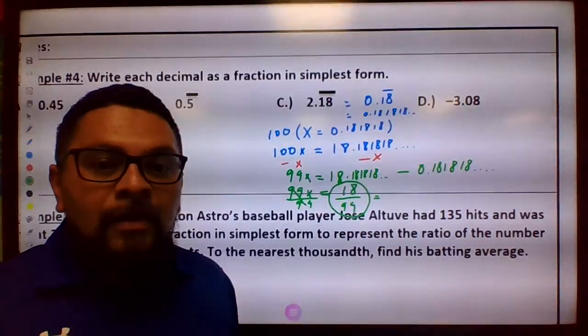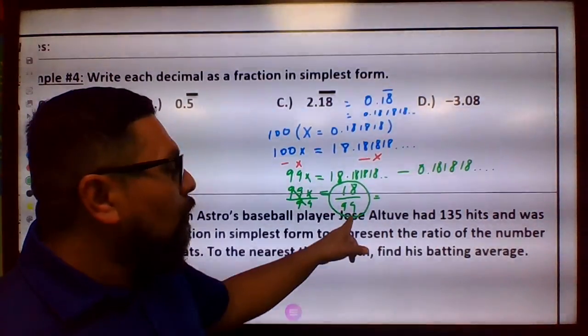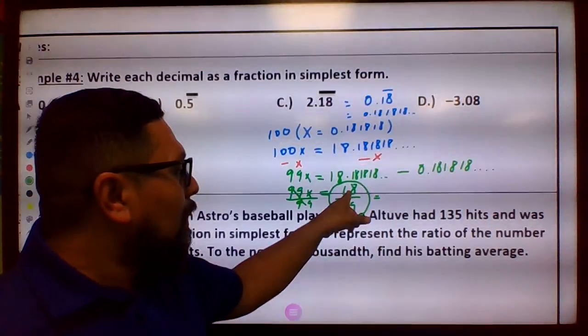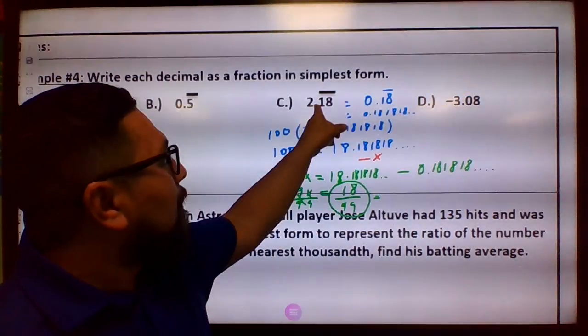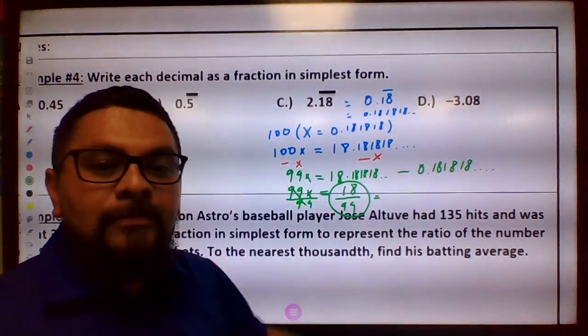D. Now to do D, it's easy, it's even easier than this. Remember, when you get an answer here, whatever answer you get when you simplify it, bring back the 2. So it's going to be 2 and something.